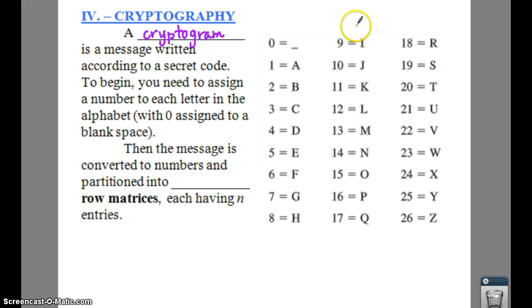If you notice, over here on the right, you have the numbers 0 through 26. 1 through 26 represents a letter in the alphabet. Makes sense. 1 is A, 2 is B, and on and on.